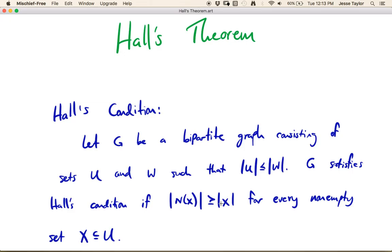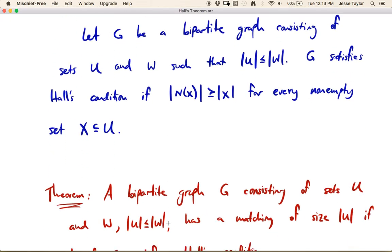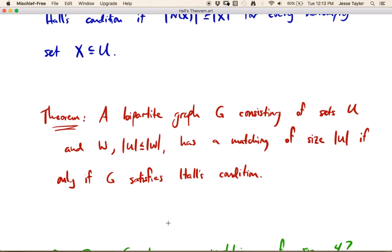So we'll explore that a little more in just a second. I know this is sort of a lot of symbols, but we'll see it in a few examples in a moment. But let's talk about Hall's Theorem. It says that a bipartite graph consisting of sets U and W, again where U is the small side, has a matching that covers up the small side if and only if it satisfies Hall's condition. Okay, so let's see this in action.